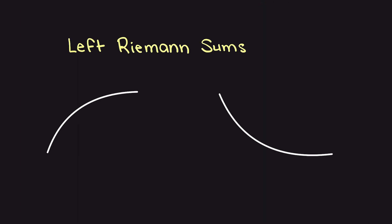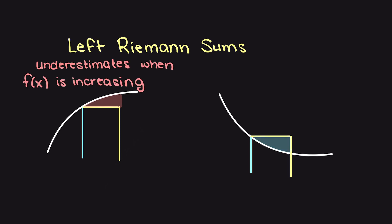One thing to note about the left Riemann sums is that they underestimate when we have an increasing region of our function, and then they overestimate when we have a decreasing region of our function. Just keep this information in mind as it will be important when we begin to talk about the error produced by each type of Riemann sum in the coming videos.